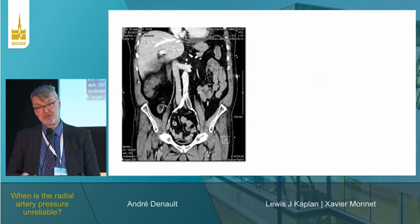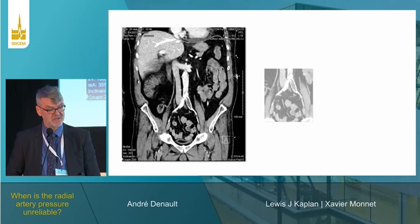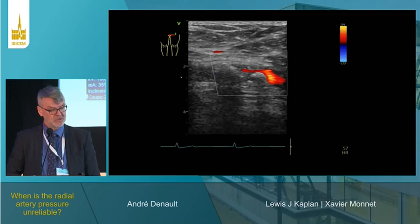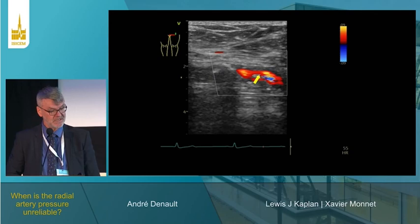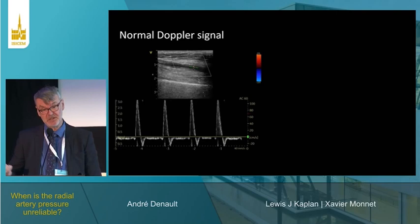You could say, let's stop using radial and do femoral instead — but femoral can have the same problem. This patient had severe femoral artery stenosis, so the femoral artery won't be reliable either. On 2D Doppler, you can see the obstruction. The lesson is the same: before placing a catheter in an artery, examine it with 2D and Doppler. A normal Doppler signal shows diastolic reversal; in the patient with significant stenosis, there was no diastolic reversal.